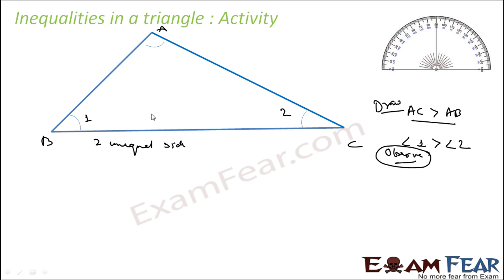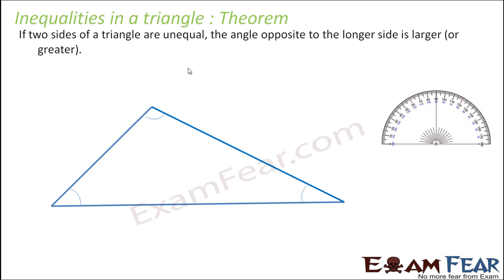Bigger side AC gives a bigger opposite angle; smaller side AB gives a smaller opposite angle. The observation is that the angle opposite to the greater side is the greatest, and the angle opposite to the smaller side is the smallest. So in this triangle with two unequal sides, whatever we have discussed is actually the theorem, and since it is a theorem, we have to prove it.